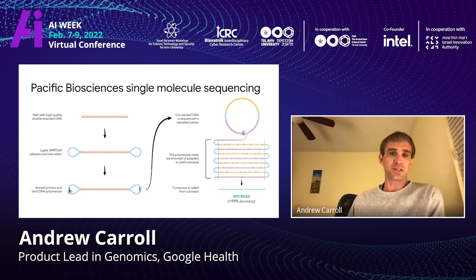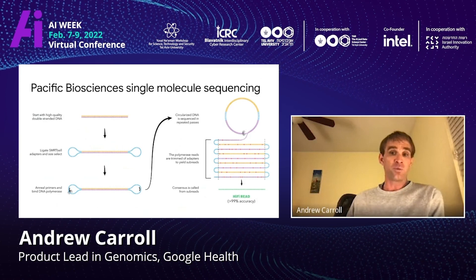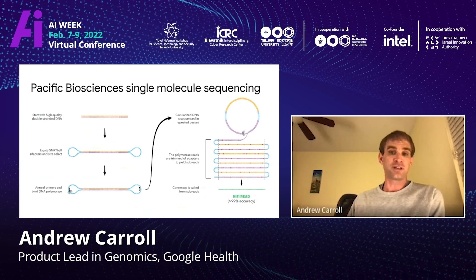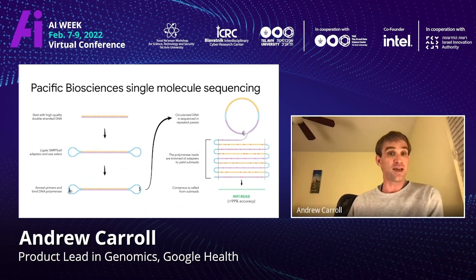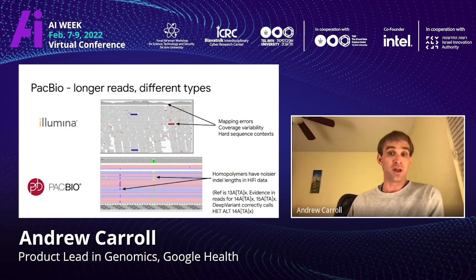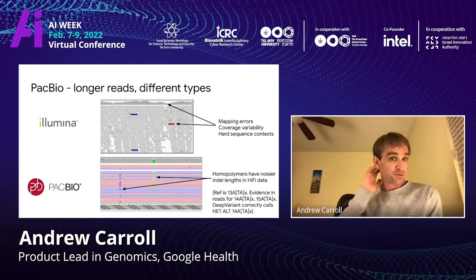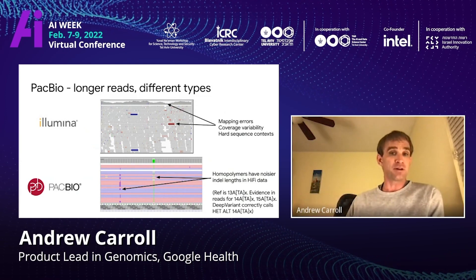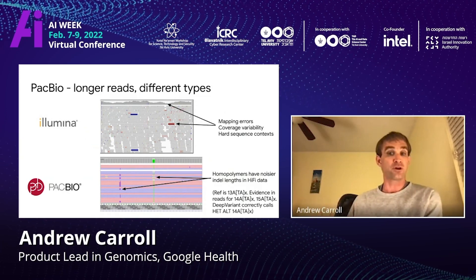DeepConsensus has been written to address a particular sequencing technology — Pacific Biosciences or PacBio — which is a single molecule technique that sequences the same molecule multiple times. As a single molecule technique, its error rate is higher, but because it can build a consensus over time, it can achieve a high degree of accuracy. The reads are much longer, which is very good for mapping difficult parts of the genome or assembling genomes from scratch compared to existing technology like Illumina. The types of errors it makes are different, and we reasoned we could apply machine learning methods to better correct those error types.